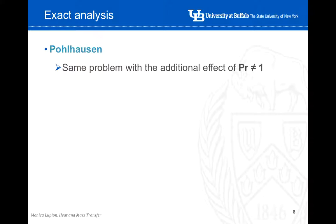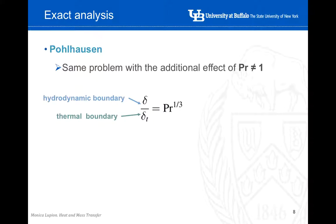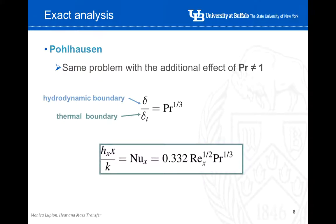This solution has a few limitations. First is the geometry — this solution can only be applied to a flat plate. Second, the Prandtl number has to be one. Paul Hausen studied the same problem but considering the additional effect of having a Prandtl number different from one. He defined the Prandtl number in relation to the thickness of the hydrodynamic boundary layer and the thickness of the thermal boundary layer, and introduced this into the previous equation to get the final result.